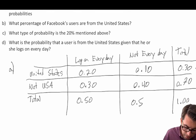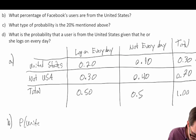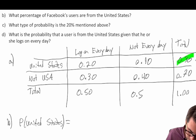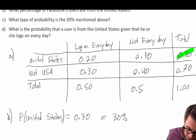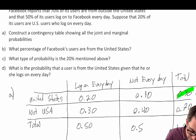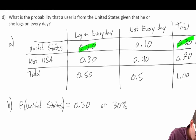For part b, what percent of users are from the United States? The probability of USA is a marginal probability equal to 0.30, or 30%. For part c, what type of probability is the 20% mentioned above? That 20% — US users who log on every day — appears in the body of the table, so it is a joint probability.